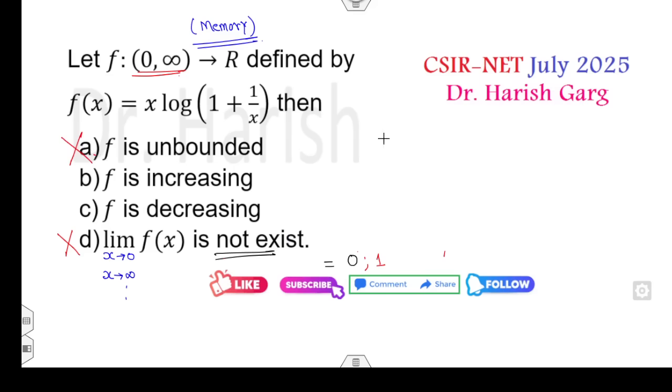Now look at whether it's increasing or decreasing, because part b, only one correct option is there. So I can calculate the derivative: log(1 + 1/x) + x times 1/(1 + x) times minus 1/x². Now if you do the calculations, it is log of (1 + 1/x) minus 1/(1 + x).